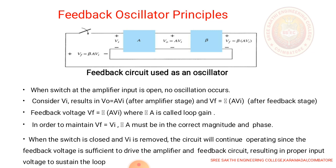Feedback oscillator principles. The block diagram gives two blocks which is A and beta, where A represents the amplifier stage and beta represents the feedback stage. When the switch at the amplifier input is open, then there is no oscillations. Consider amplifier has an input voltage of VI and the output of that amplifier is V0 equals A times VI.